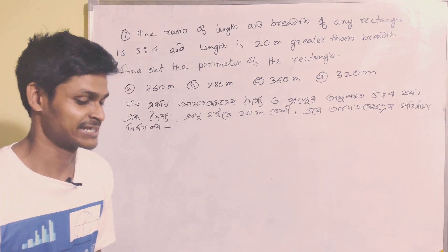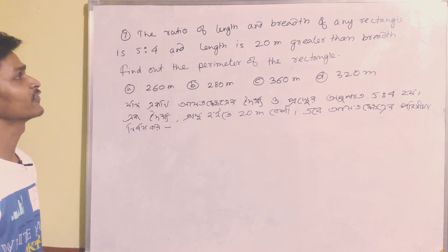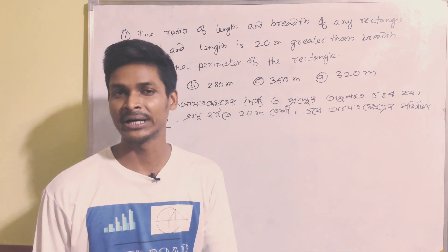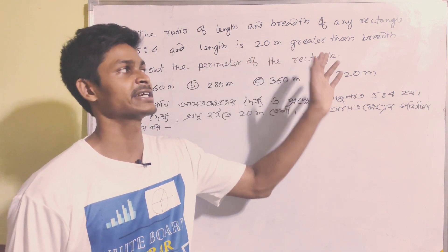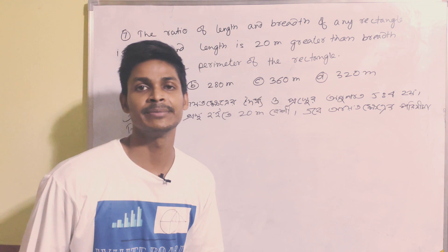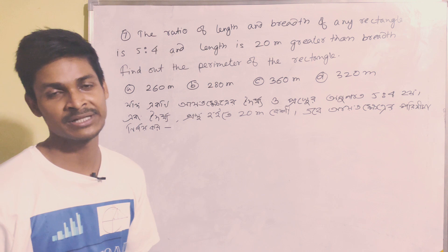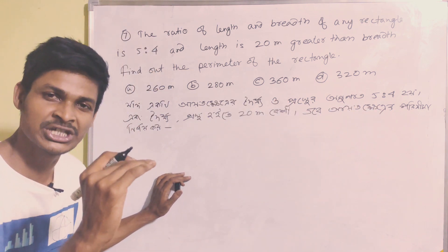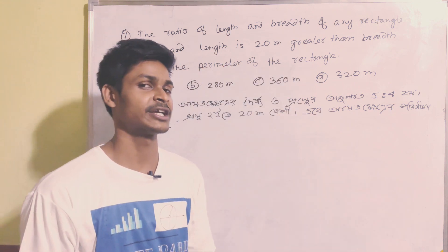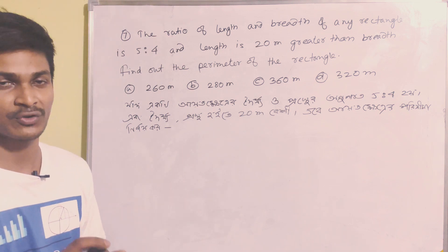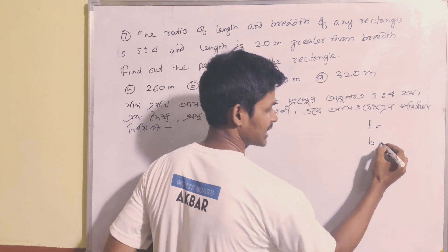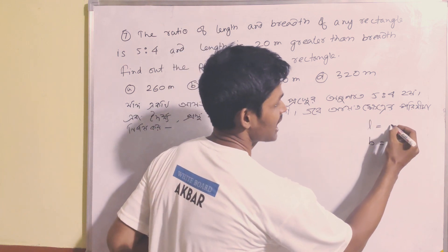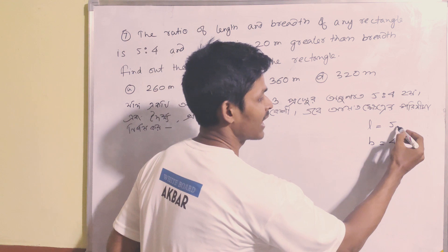Question number 7: the ratio of length and breadth of a rectangle is 5 is to 4, and the length is 20 meters greater than the breadth. We can be asked to find the perimeter. Length in English means the long side, breadth means the width. So let length equal 5x and breadth equal 4x.